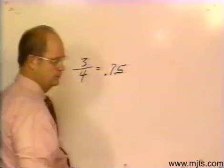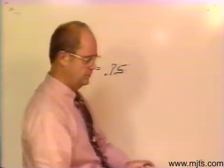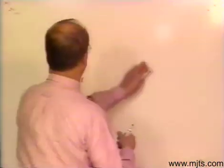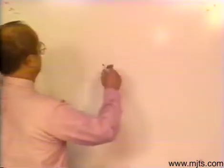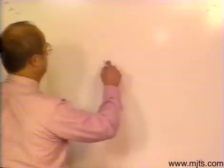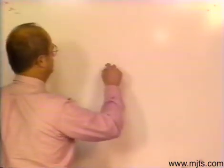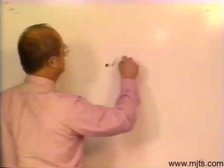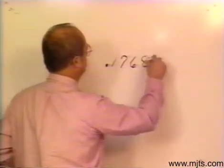Now, if I was to take a large number and show you the place value, we would have something as follows. We would have 1, 7, 6, 8, 9.